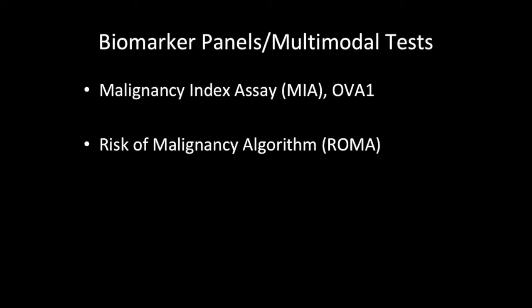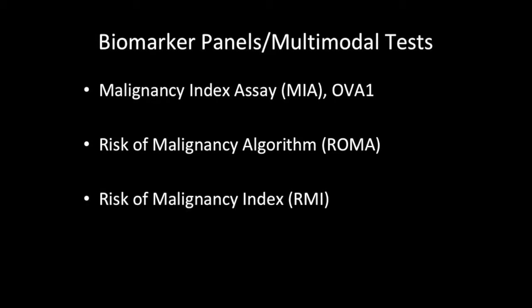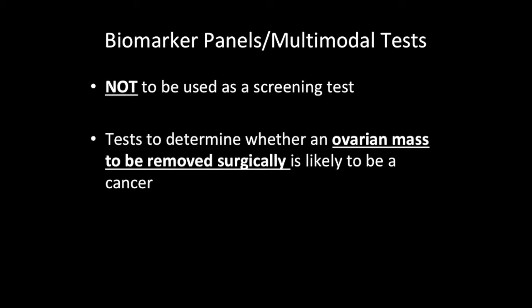The three biomarker panels or multimodal tests to be discussed are the malignancy index assay, also known as OVA1, the risk of malignancy algorithm, also known as ROMA, and the risk of malignancy index, also known as RMI. A key point to remember is that these tests are not to be used as a screening test, but instead should be used to determine whether an ovarian mass already planned to be surgically removed is likely to be cancer.